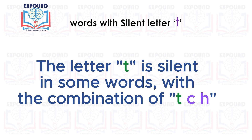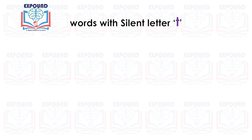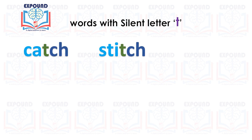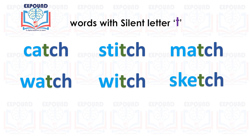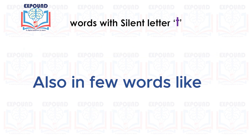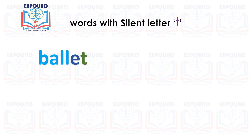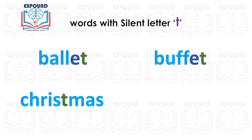Rule 3: The letter T is silent in some words with the combination T-C-H. Examples: catch, stitch, match, watch, witch, sketch, butcher. Also in a few other words like ballet, buffet, Christmas, and asthma.